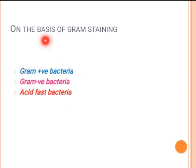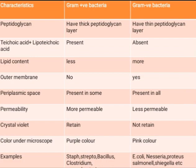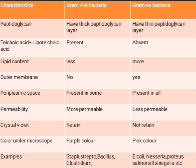To distinguish gram positive and gram negative bacteria, remember this table: gram positive bacteria have a thick peptidoglycan layer, while gram negative bacteria have a thin peptidoglycan layer. You can remember this with a mnemonic — peptidoglycan starts with P and P means positive, so gram positive bacteria have much more peptidoglycan, while gram negative bacteria have less peptidoglycan.